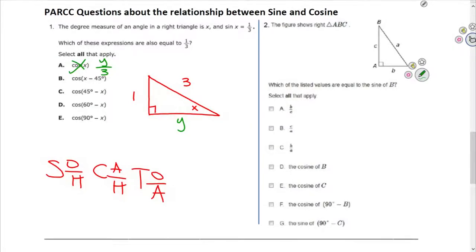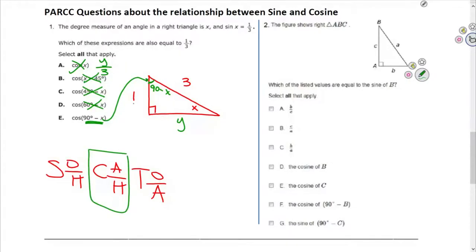90 minus X means it's the complement — the other acute angle to X. So this angle is 90 minus X, and what's the cosine of that angle? It's the adjacent to that angle divided by the hypotenuse, which is one-third. So the cosine of (90 minus X) is also equal to one-third. It is pretty abstract, but that's what we're teaching right now.